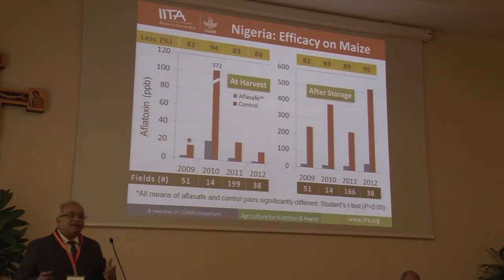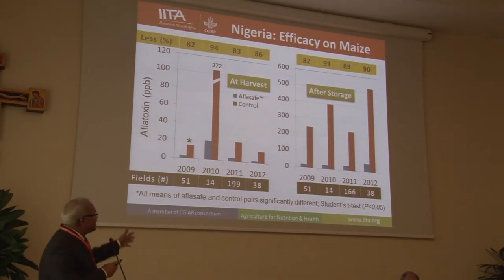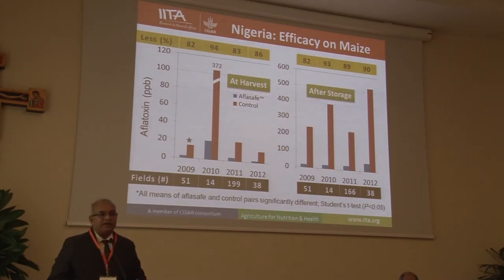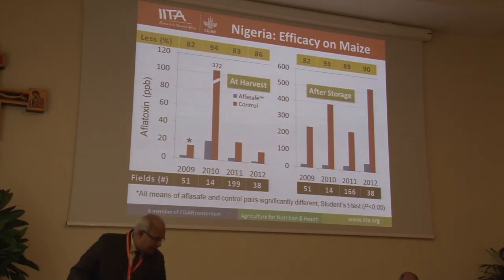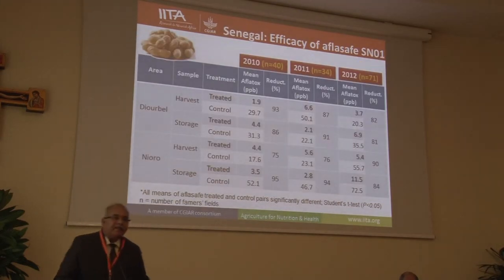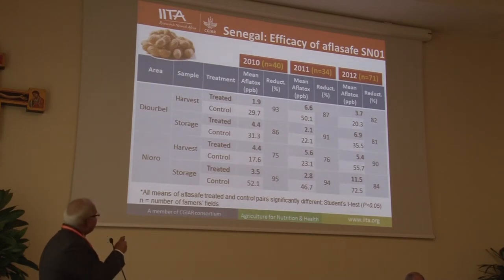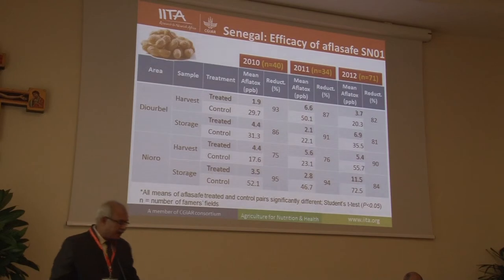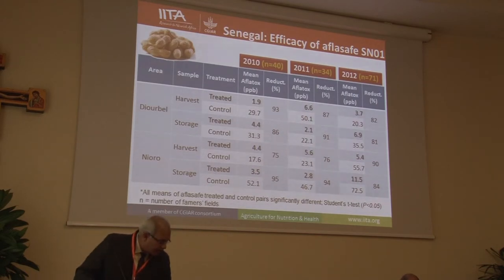The same protective effect continues into storage. If you take these grains and put them in the store, the amount of contamination does increase, but you still see a large impact in reduction of toxin contamination. The same results apply to groundnut in Senegal — in two different areas, Durbel and Nero, at harvest and in storage, the level of reduction seen across different tiers is more than 80%, consistently reducing toxin contamination.